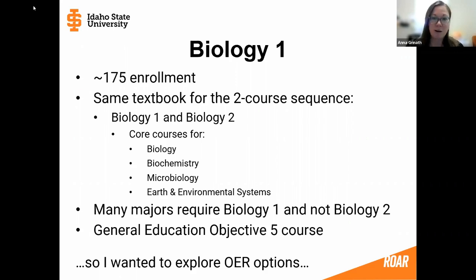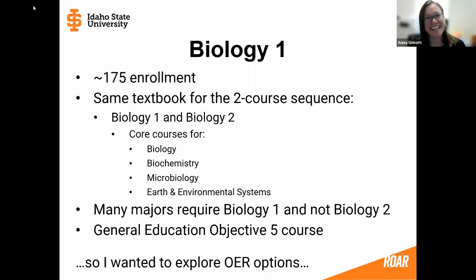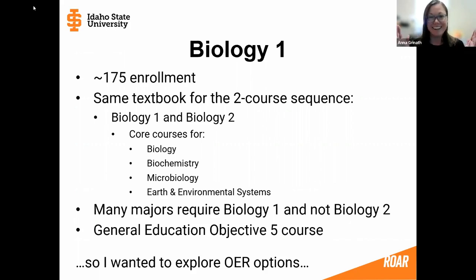I teach a course called Biology One, and this course can range in enrollment. Sometimes I have 75 students, and most recently in the fall, I had 175 students. It's a pretty large enrollment course, and this Biology One course is part of a two-course sequence — one semester of Biology One, and then the next semester of Biology Two. Typically the same textbook is used for that two-course sequence, with the first half of the book pertaining to Biology One and the second half to Biology Two.